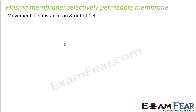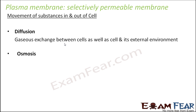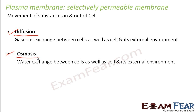So the plasma membrane is a selectively permeable membrane. Movement of substances in and out of the cell happens by two processes: diffusion and osmosis. Diffusion involves gaseous exchange between cells as well as between a cell and its external environment. The difference is that diffusion talks about particles, while osmosis mostly talks about water. In both processes, movement takes place from a region of higher concentration towards a region of lower concentration.